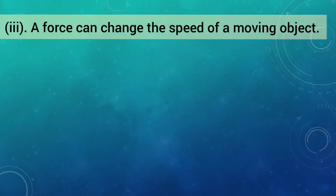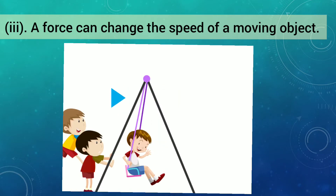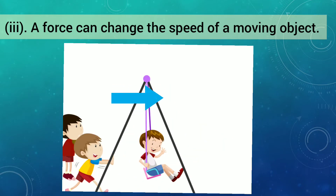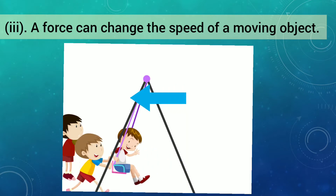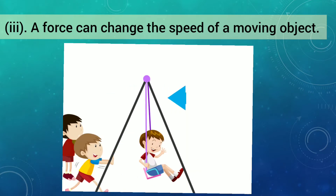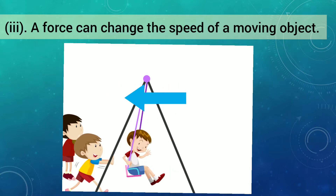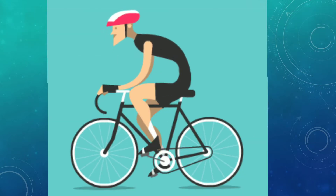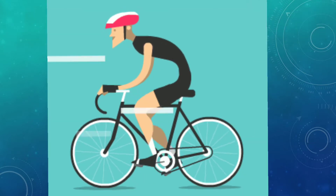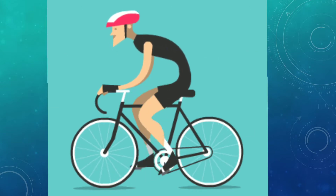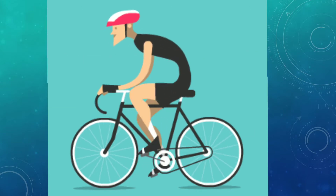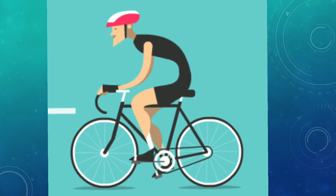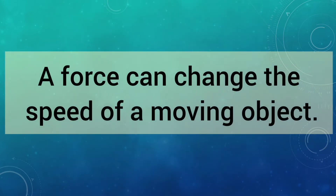Force can change the speed of a moving body. When a person pushes a moving swing it moves faster, and when he or she pulls the swing in the opposite direction it slows down. Similarly, when more force is applied on the pedals by a cyclist, the speed of the cycle increases. So force can change the speed of a moving object.